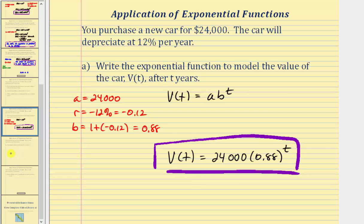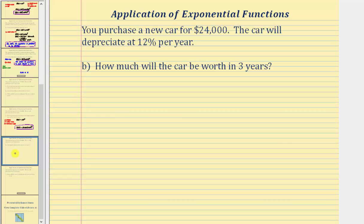Now for part b, we're asked to determine the value of the car in three years. So using the function that we just found, we want to determine the function value V of three, which is 24,000 times 0.88 raised to the power of three. Now it doesn't tell us where to round, but we'll go ahead and round to the nearest dollar.